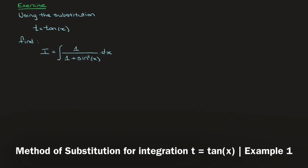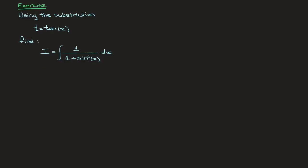Let's see how to use the substitution t equals tan of x to find the integral I, which equals the integral of 1 over 1 plus sine squared of x. To do this, we're going to follow three steps. The first step is to change the variable — in other words, to rewrite this integral in terms of the new variable t, which equals tan of x.